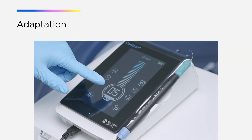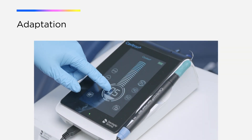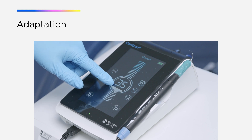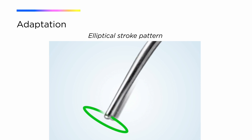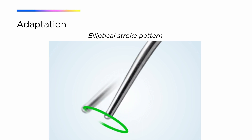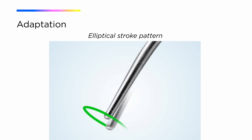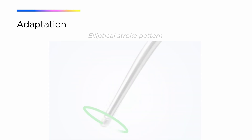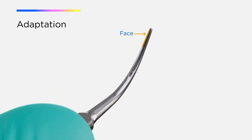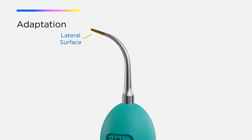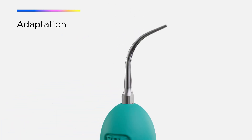Cavitron ultrasonic scaling systems are magnetostrictive technology. Therefore, the insert moves in an elliptical stroke pattern. With this elliptical movement, all surfaces of the active area are working surfaces. Specifically, the clinician has the ability to adapt all four surfaces — the back, face, and two lateral sides of the insert — to the tooth surface.